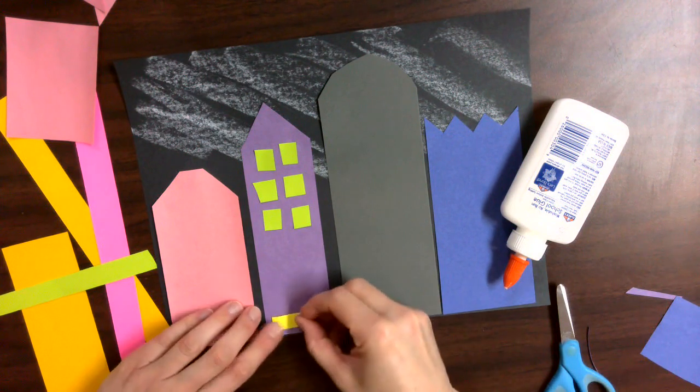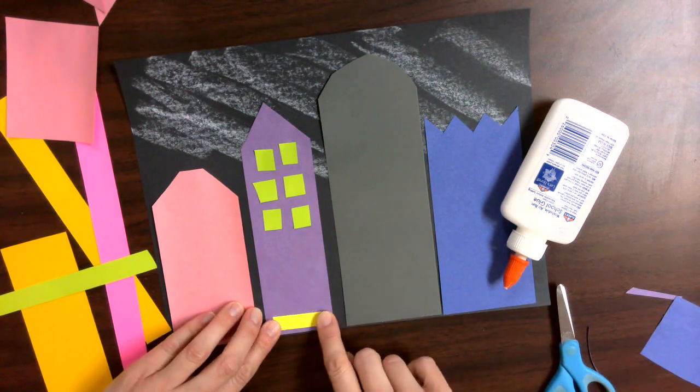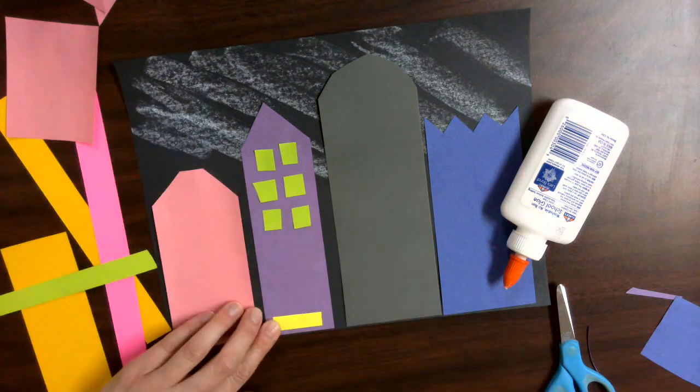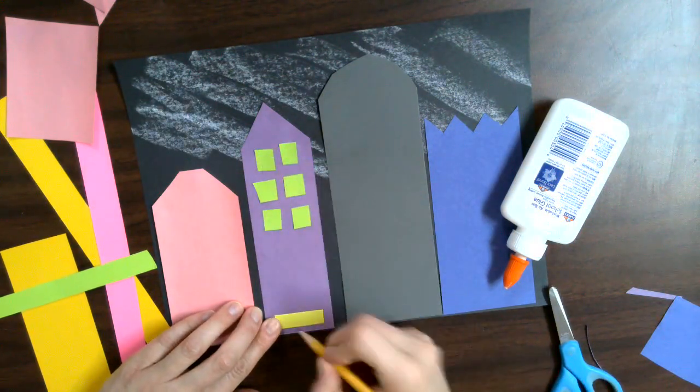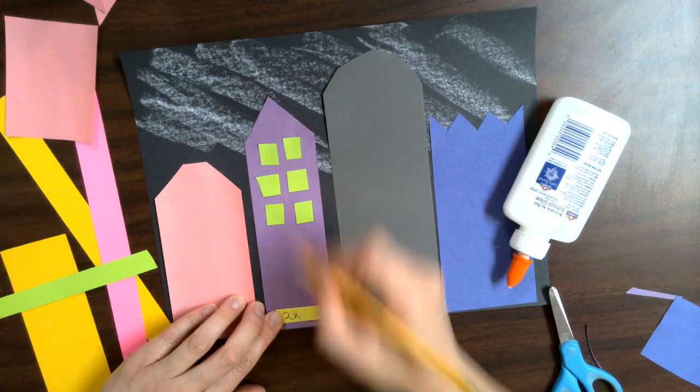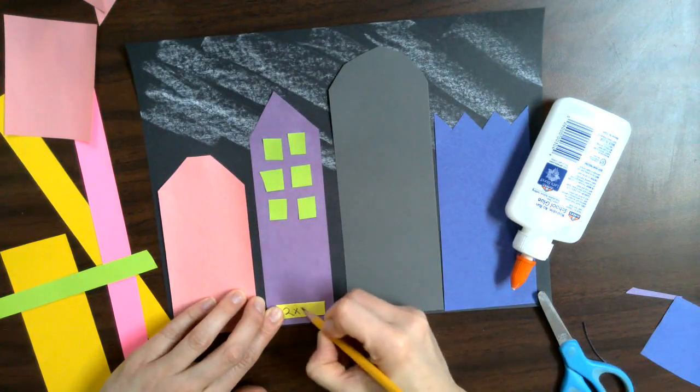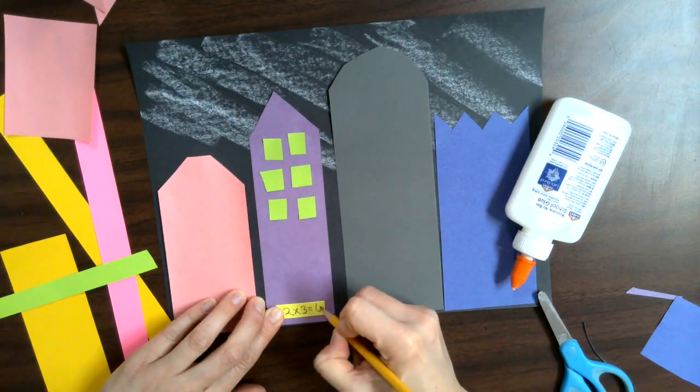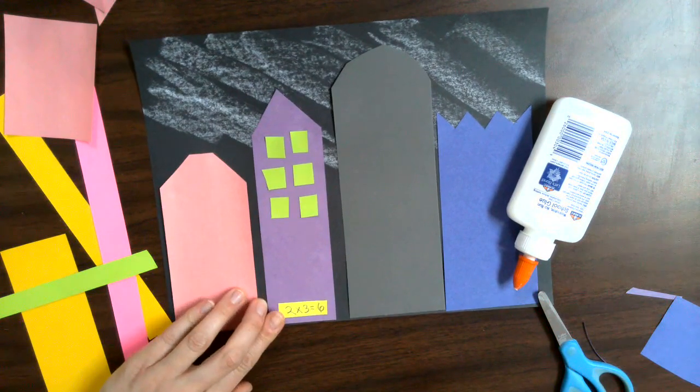After placing your windows you're going to write your math fact down at the bottom. So on this blank one, I would glue this here and write two times three equals six and glue that right there.